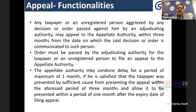The appeal must be filed with the appellate authority. The time period for filing appeal is three months from the date of order, and there is one month for condonation of delay — that depends on the appellate authority. In total, there is a four-month window. Any aggrieved person, whether a taxpayer or unregistered person, can file the appeal on the GST portal.